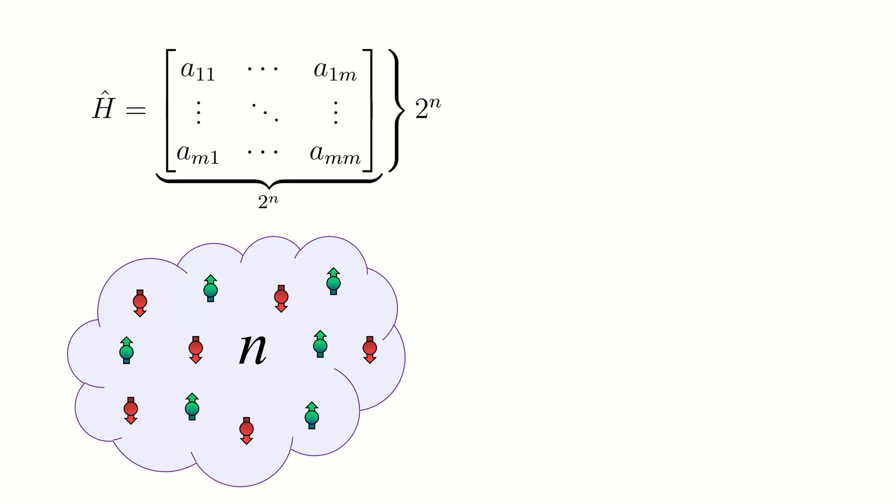Hamiltonian simulation. Quantum systems are described by Hamiltonian. In the case of a system of n particles with a spin of half or qubits, the Hamiltonian is a square matrix of size 2 to the power of n by 2 to the power of n.